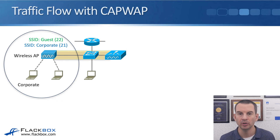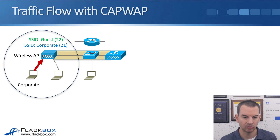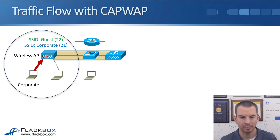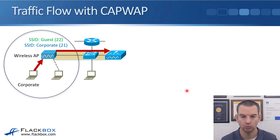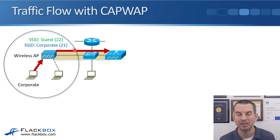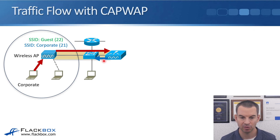Next, let's look at what we do when we have a wireless LAN controller — there's a different traffic flow. The laptop in the corporate WLAN sends a frame to the wireless AP, but now the AP does not tag it with the corporate VLAN and send it to the attached switch. Instead, the wireless AP sends it to the wireless LAN controller through the CAPWAP tunnel — the AP is not tagging the traffic. The frame goes to the WLC, which sees it is for the corporate VLAN and tags it with the corporate VLAN before sending it back to the switch, which forwards it to its final destination.